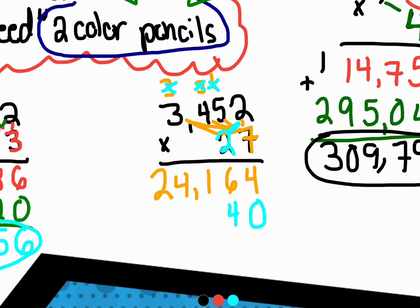Two times two is four, two times five is 10. Two times four is eight, plus one is nine. And then two times three is six.